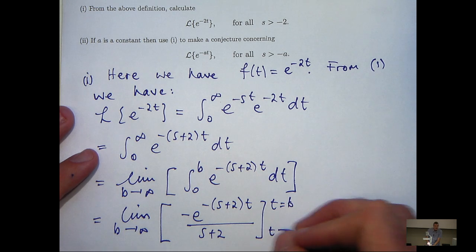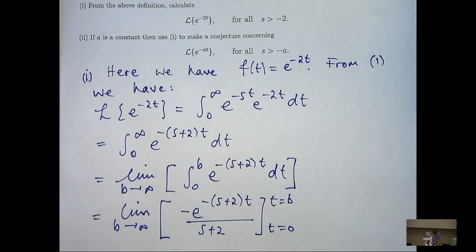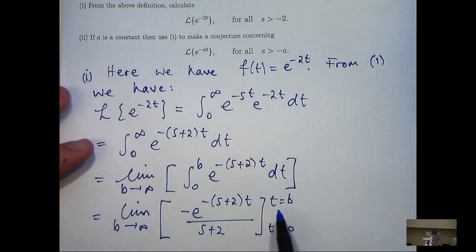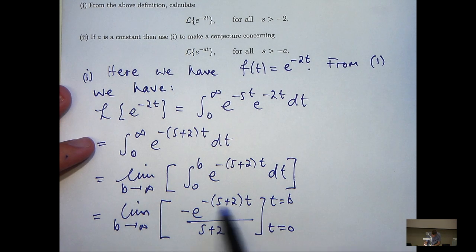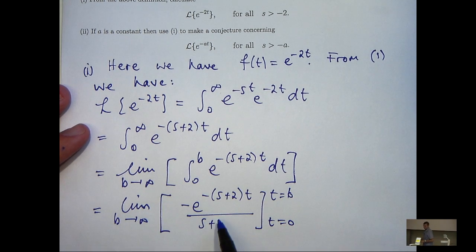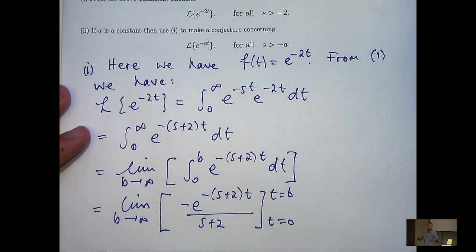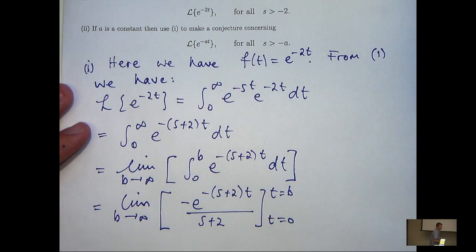Oops, t equals b. Okay, now you know that these substitutions do not involve s. Neither does the limit. So, I can actually take the factor of 1 over s plus 2 at the front. Now, that will just simplify the calculations a little bit.